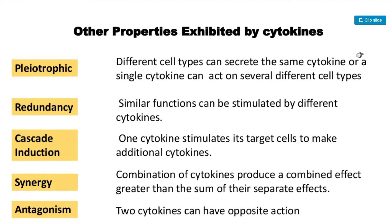This combined greater effect is called synergy. We have also studied pleiotropy — different cell types can secrete the same cytokine, or a single cytokine can act on several different cell types. Redundancy means similar functions can be stimulated by different cytokines. Cascade induction means one cytokine stimulates a target cell to make more cytokines. Finally, antagonism means two cytokines can have opposite, antagonistic actions.